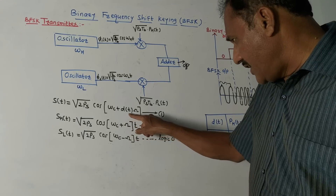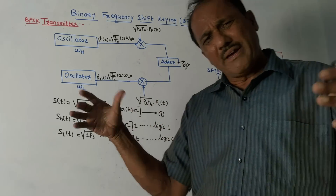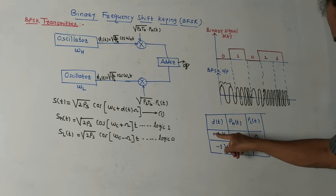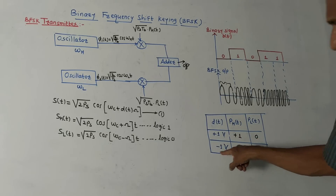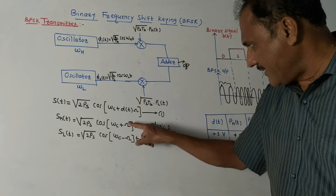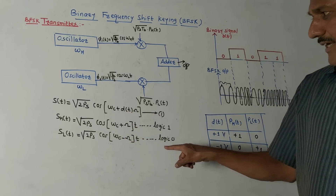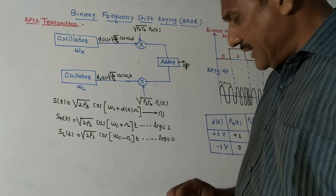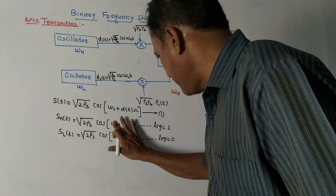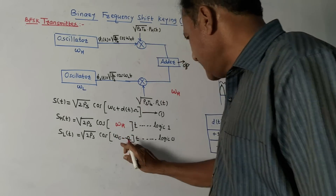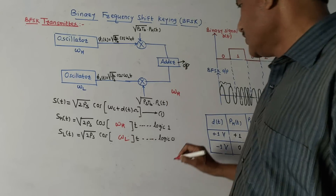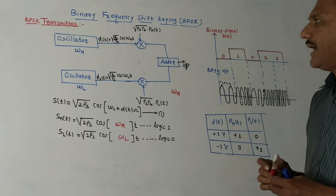To simplify: for logic one, d(t) = +1, giving the equation with (ωc + Ω), and for logic zero, d(t) = −1, giving (ωc − Ω). The term (ωc + Ω) can be denoted as ωh — the higher frequency. Similarly, (ωc − Ω) can be represented as ωl — the lower frequency. These are the two equations corresponding to logic one and logic zero.